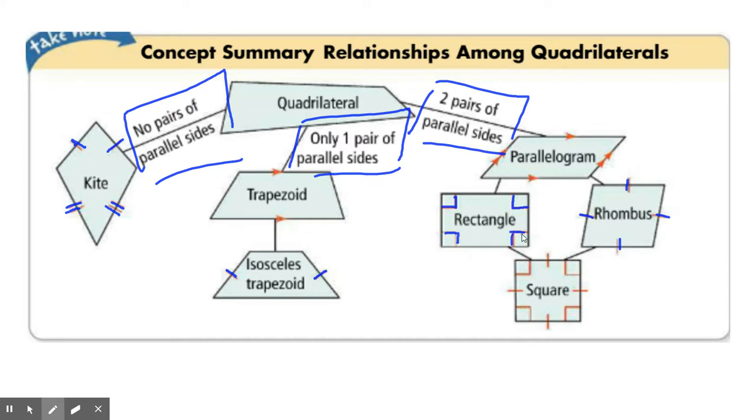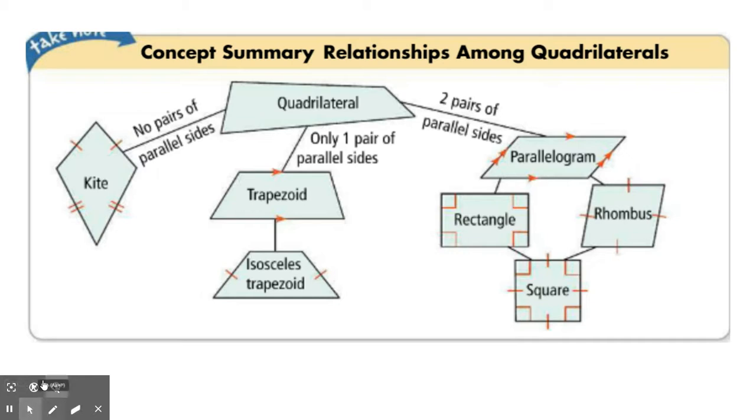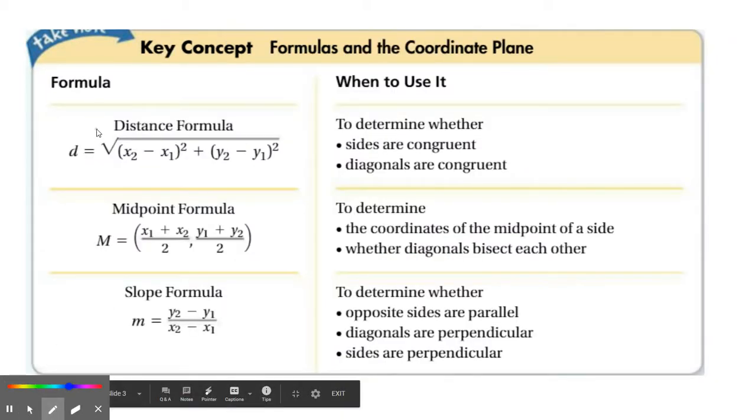So how are we going to do this on the coordinate plane? Well, you're going to graph, you're going to look at the shape, you're going to say it looks like this. But that's not good enough, right? I need you to show me. So whatever it looks like, you have to then show me what it is. And to do that, we're going to use these formulas.